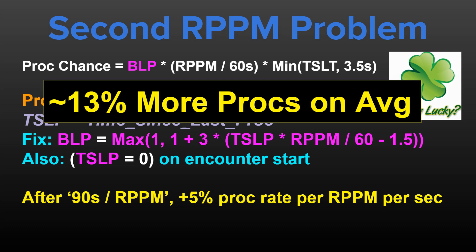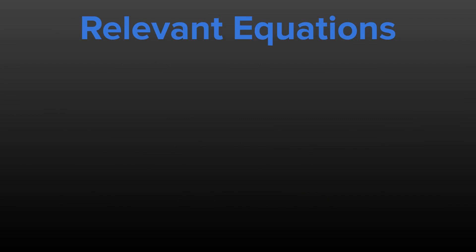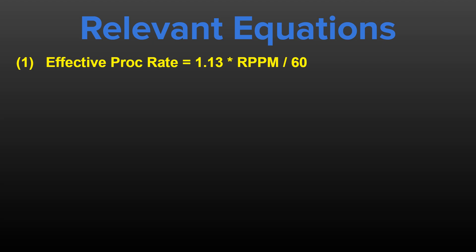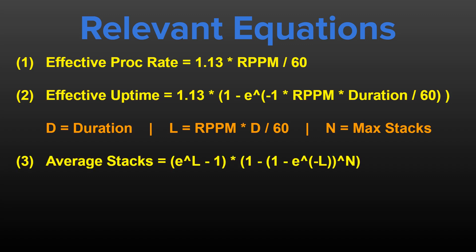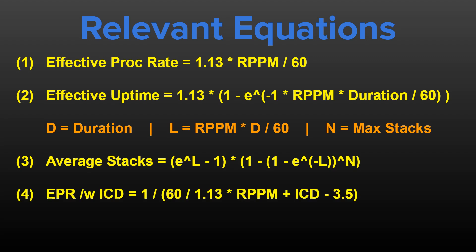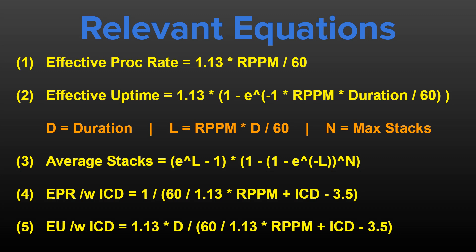I will leave you with just a few mathematical formulas that can be useful if you are the type of person that likes to do calculations, though they all assume near continuous triggers on the associated proc effect. The first is effective proc rate. The second is effective uptime on a proc-based buff. The third is average stack-weighted uptime on a proc-based buff that can stack up to n times. The fourth is average proc rate with internal cooldown. The fifth is the mean uptime on a proc-based buff with an internal cooldown. There are RPPM-based effects in the game that have internal cooldowns as well, even though these are generally the minority of effects.